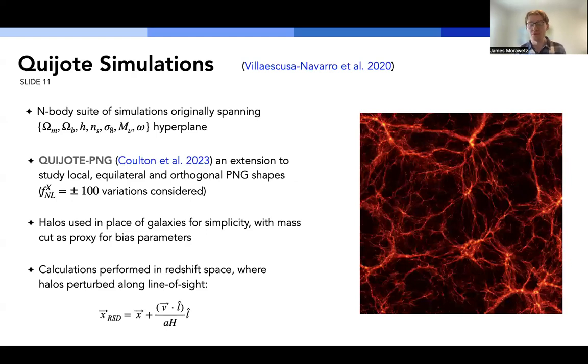So to actually calculate these results, we make use of the Quijote N-body suite of simulations, which originally spanned the five lambda-CDM parameters, and the neutrino mass and the dark energy equation of state hyperplane. And we focus specifically on a subset of these simulations called Quijote PNG, which focuses in particular on local equilateral and orthogonal PNG shapes. For our analysis, we use halos in place of galaxies for simplicity. In practice, if we wanted to get more accurate constraints, we would incorporate some HOD modeling. To partially make up for this, we introduce a mass-cut parameter for the halos. And this sort of acts as a proxy for the different bias parameters. And I should mention, also, all of our calculations are performed in redshift space, where the halos are perturbed along a line of sight.